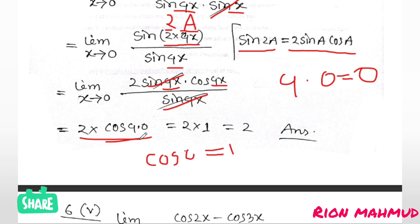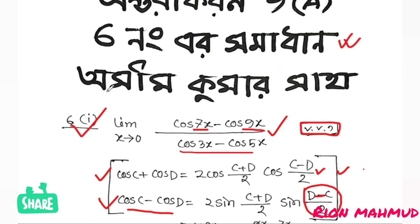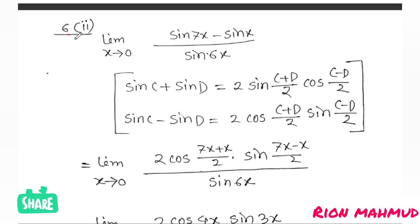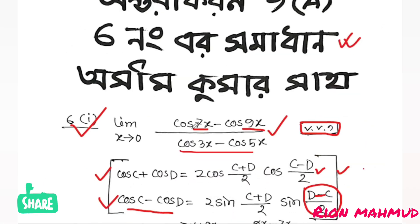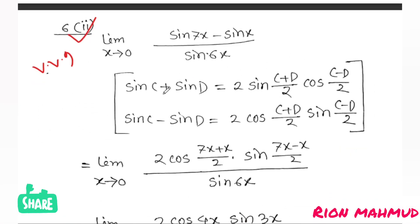The answer is 1 into 2, which gives 2. Now the second question: limit x tends to 0 of (sin7x minus sinx) divided by sin6x. We will again use the sin C minus sin D formula: sin C minus sin D equals 2 cos((C+D)/2) sin((C-D)/2).